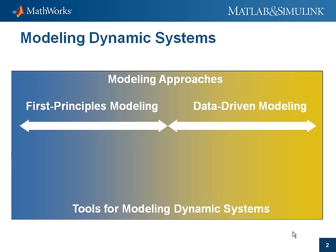System identification is the science of constructing mathematical models from observed data from a dynamic system. A dynamic system is a system with memory — how it reacts to your inputs depends on what you have done previously. Mathematical models are playing increasingly important roles in today's science and engineering, and they are required for tasks like simulation, control design, and signal processing. It is important to master various techniques for model building.